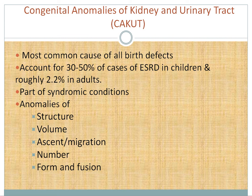There are many syndromes associated with CAKUT which you can look up in various references. The anomalies can be divided into different types, which makes them easier to understand. They can be classified according to structure, volume, ascent or migration, number, and form or fusion.